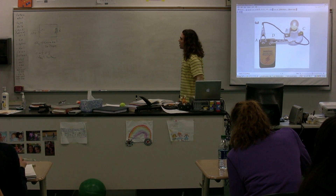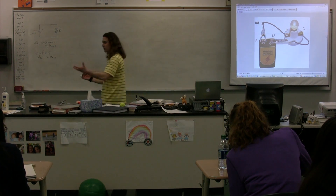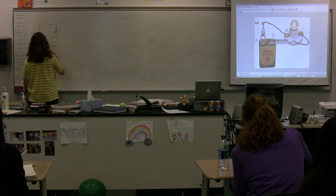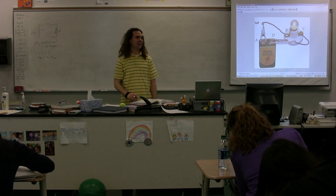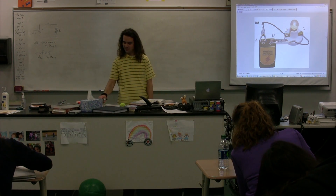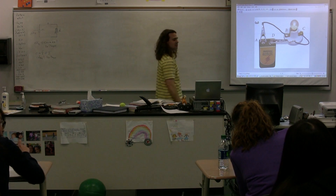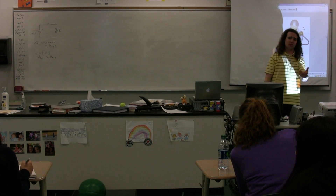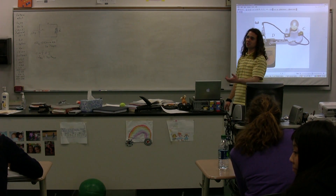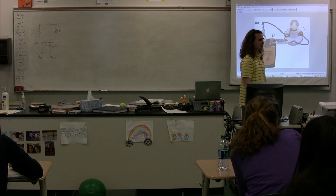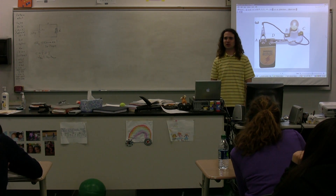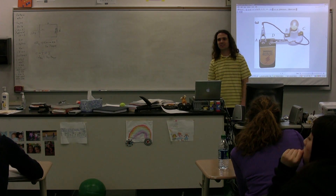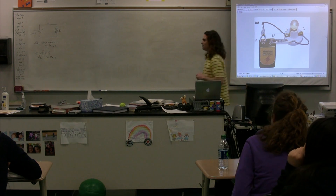We need to figure out the direction of the current in this circuit. The way we do that is we start with an anthropomorphic charge — having human-like characteristics. We're going to talk to this anthropomorphic charge. Usually, charges can't talk and don't make decisions, but we're going to act like they can — this helps you understand what happens in the circuit. We use a positive charge because current is defined by a positive charge.